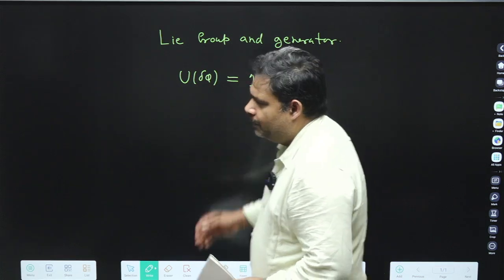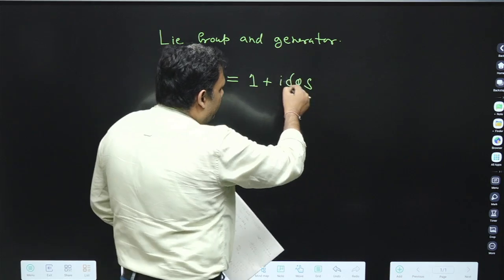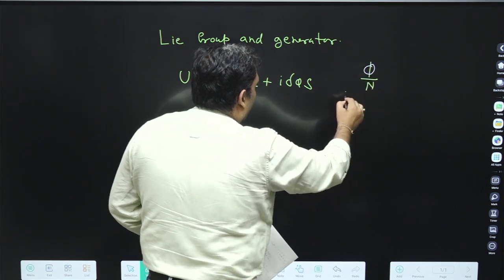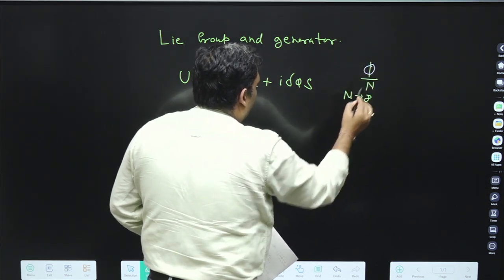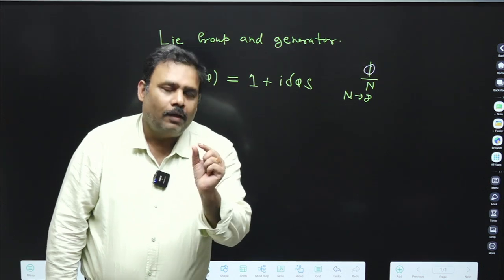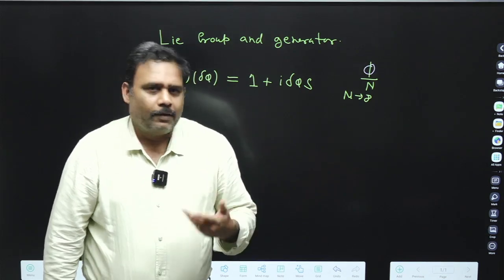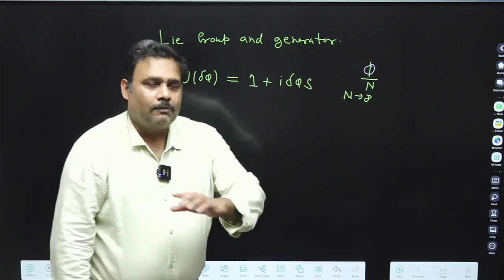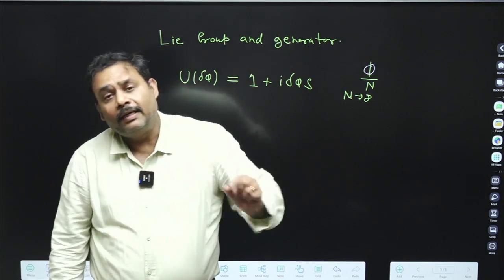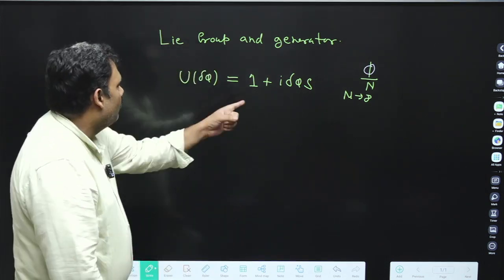If we have this kind of situation and δφ is very small, then we can write φ/n where n tends to infinity. This means we are going for a very small change in angle. If the angle is our parameter, then δφ is the complete angle divided into n parts, and as n tends to infinity, we are talking about the infinitesimal angle. This is all about the definition.